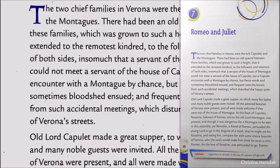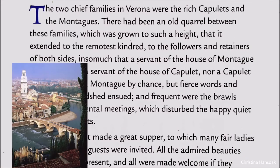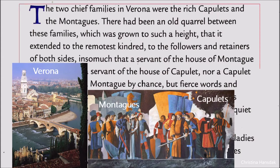Welcome back to the story Romeo and Juliet, abridged by Charles Lamb and Mary Lamb. In this story, two families are highlighted in Verona who are well known for their rivalries — on one side the Capulets, and on the other side the Montagues. These two families had their old quarrel, and it had grown to its height.